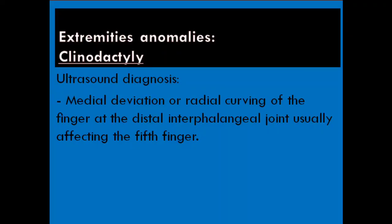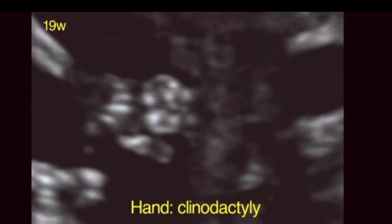The next abnormality is clinodactyly. Ultrasound diagnosis: medial deviation or radial curving of the finger at the distal interphalangeal joint, usually affecting the fifth finger.